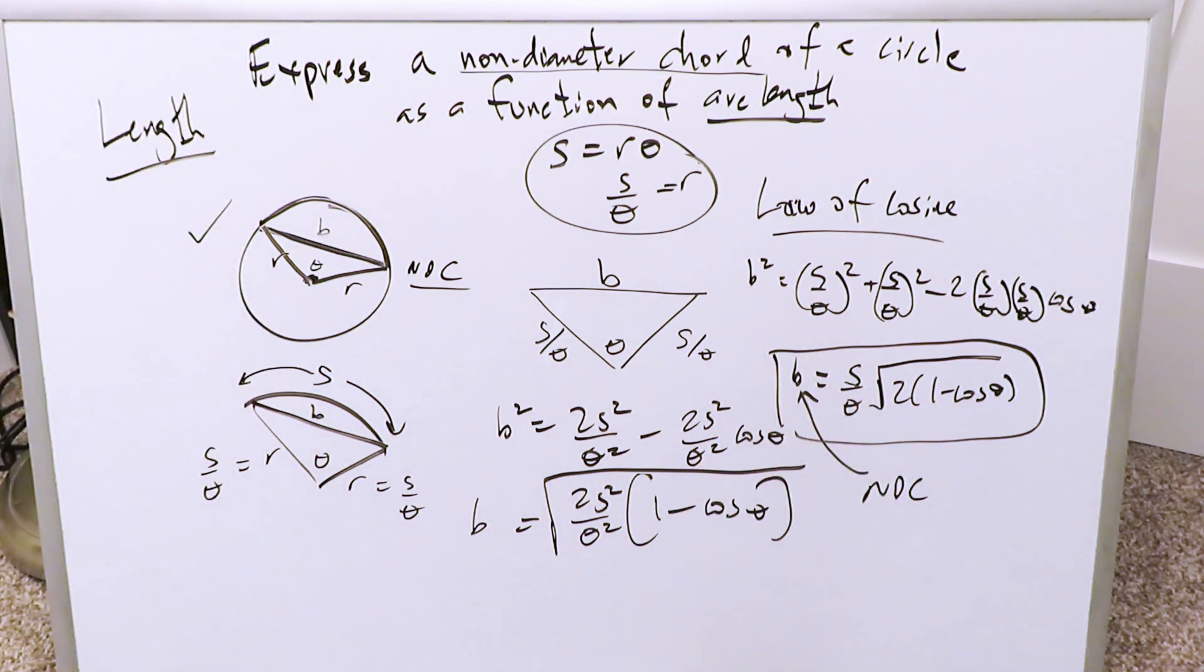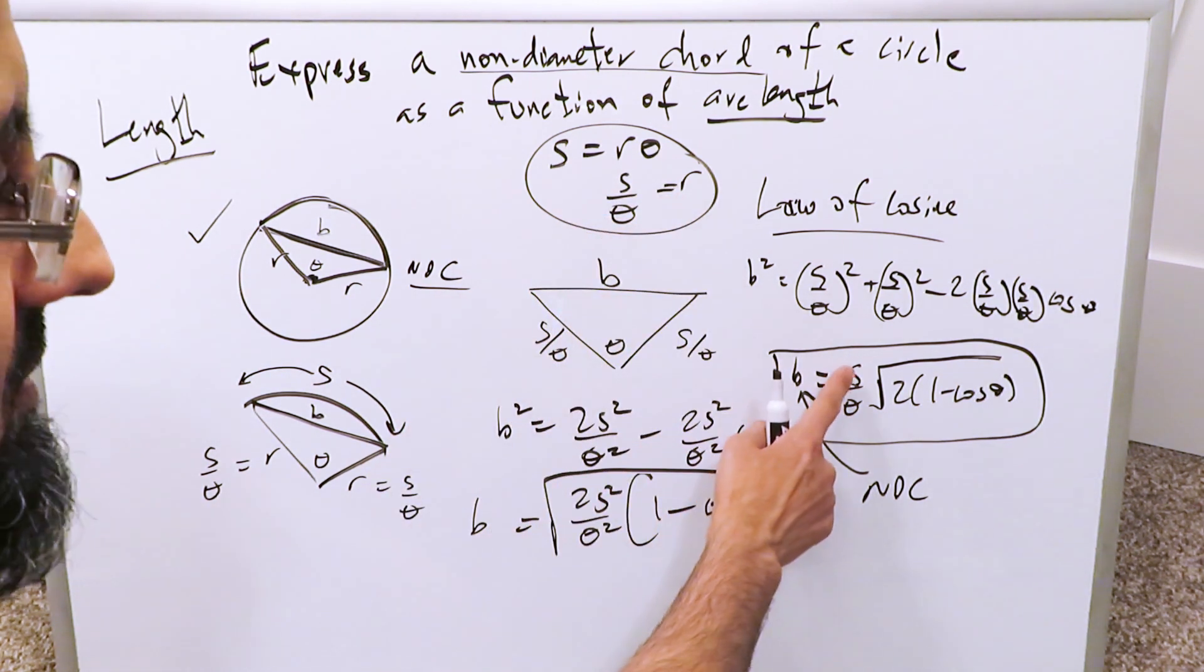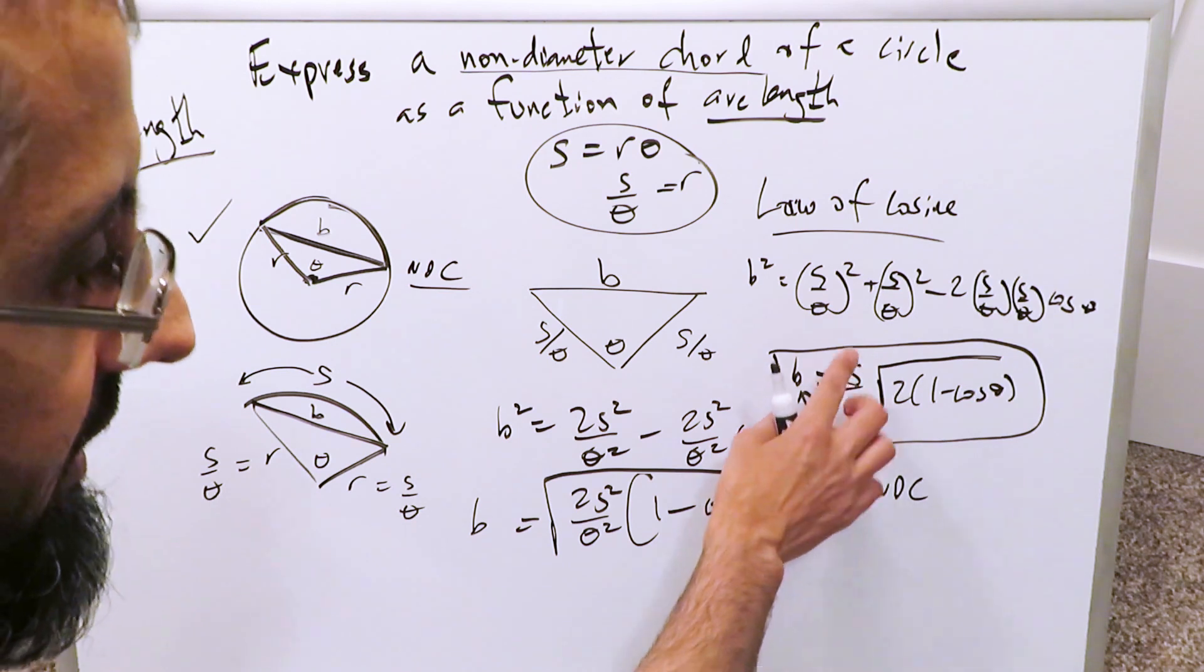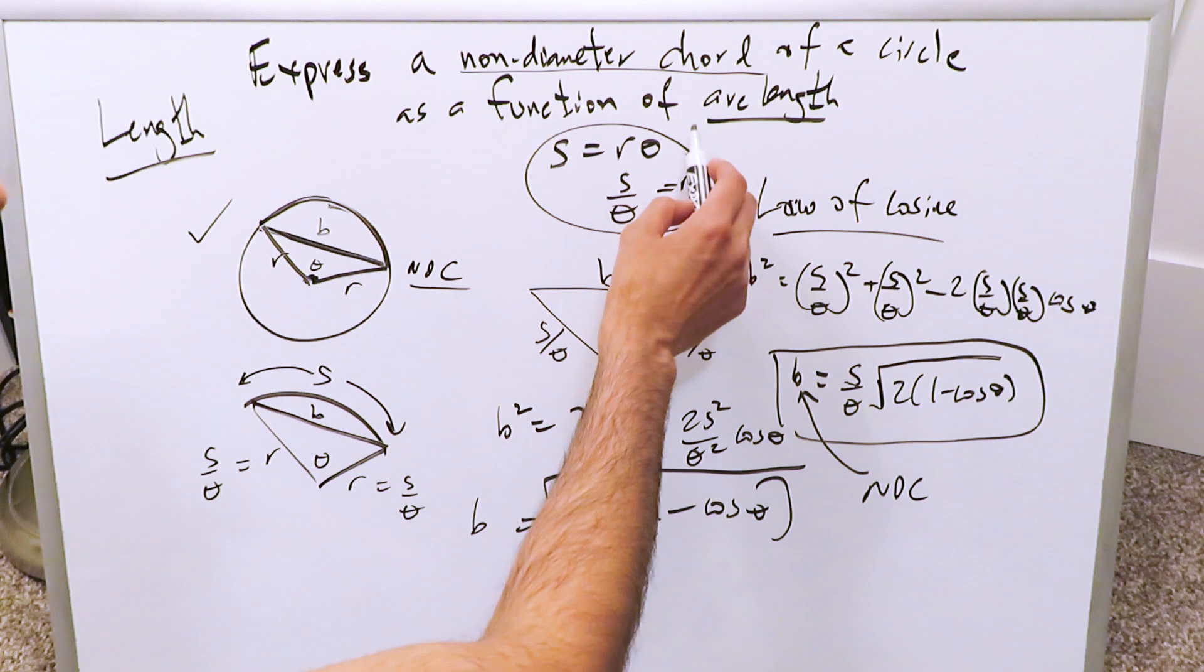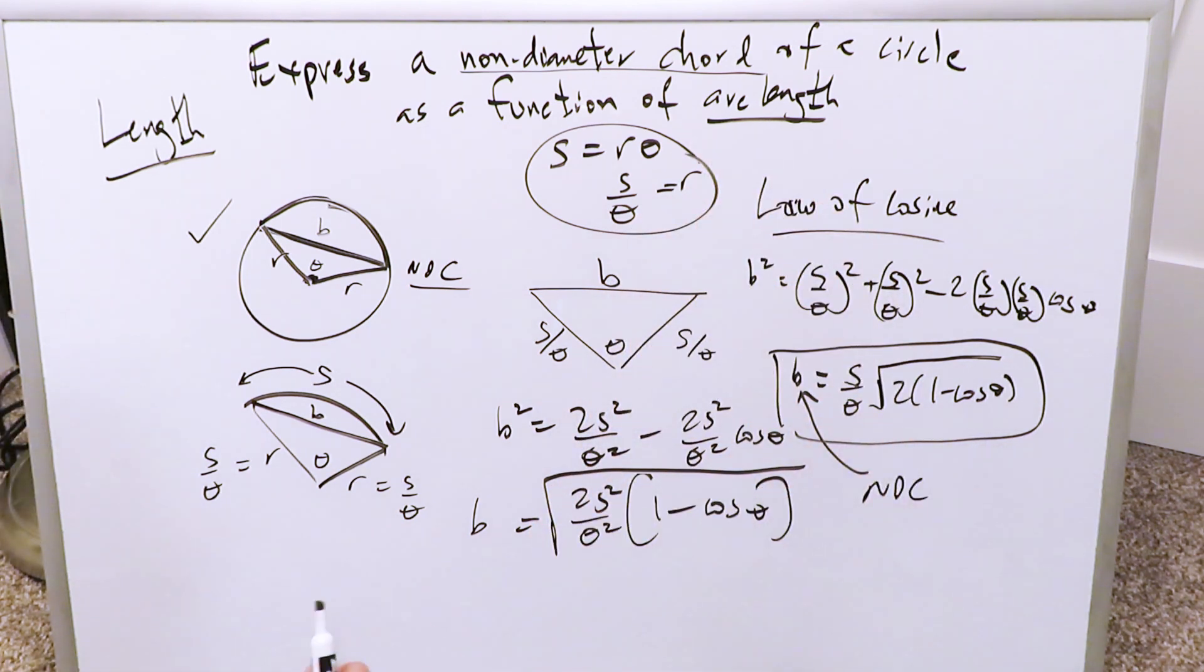That's exactly what it is. You know S is equal to R theta. You could technically bring R theta over here, and your thetas would cancel out, but then you'd lose the S variable. We have to express it specifically as a function of arc length, and this right here is our answer.